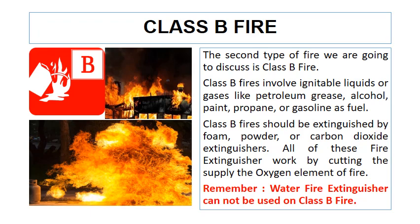The second type of fire is Class B fire. Class B fire involves ignitable liquids or gases like petroleum, greases, alcohol, paint, propane, or gasoline as fuel. A Class B fire should be extinguished by a foam fire extinguisher, powder fire extinguisher, or carbon dioxide fire extinguisher. All of these work by cutting the supply of oxygen. Remember, a water fire extinguisher cannot be used on a Class B fire.